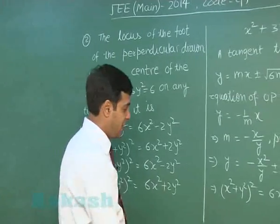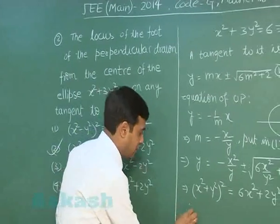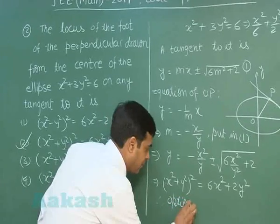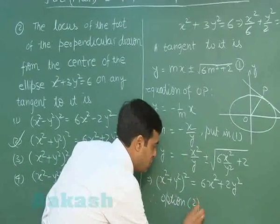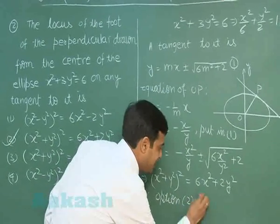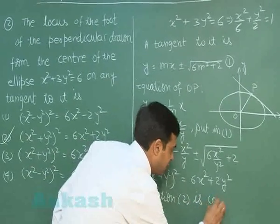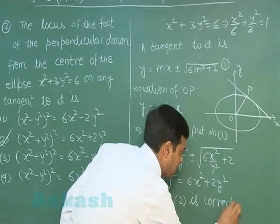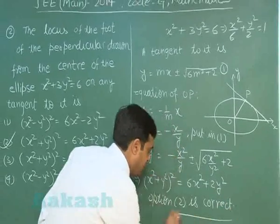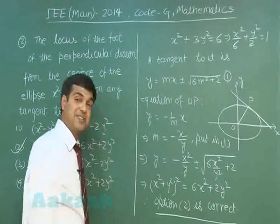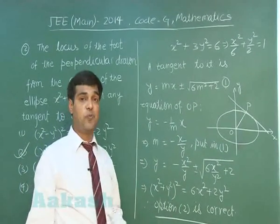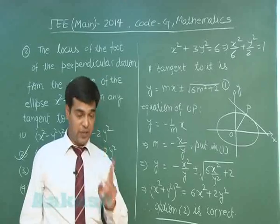So the answer for Question 2 is Option 2: (x² + y²)² = 6x² + 2y². This is clear. Let us move to Question Number 3.